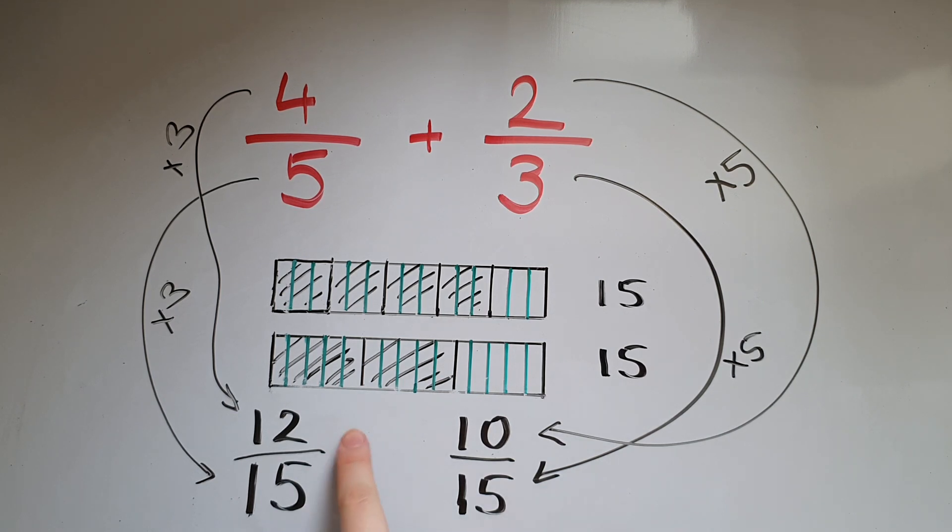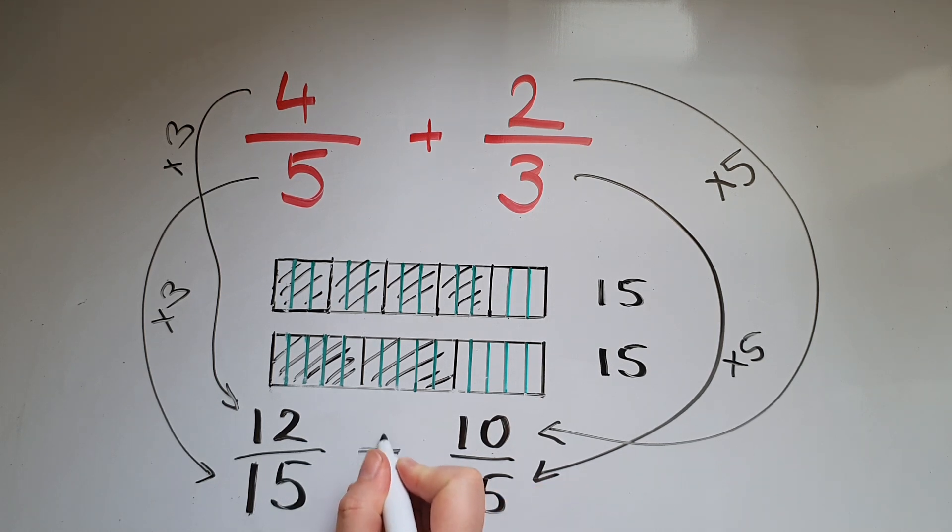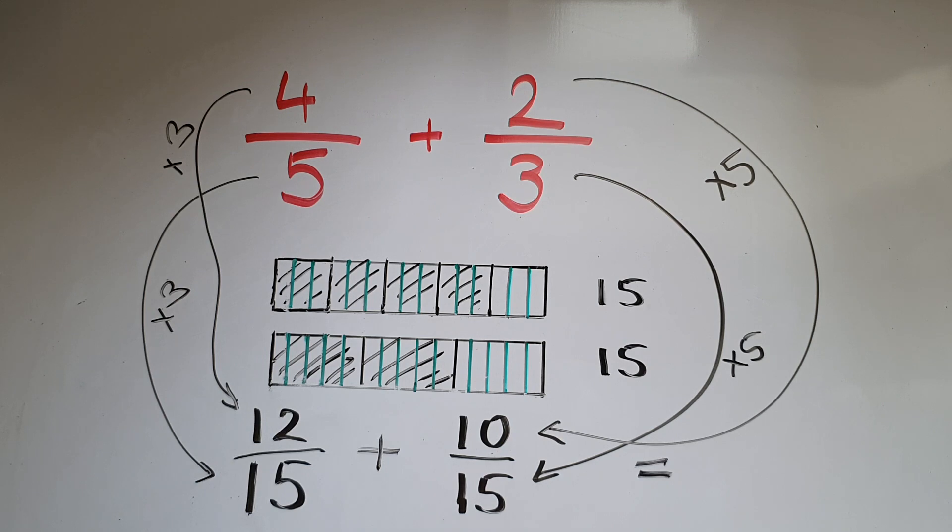So now we've got 12/15 and 10/15. Can we add them now? Yes, we can do easily because we've got the same denominator. So that is 22/15 in total.